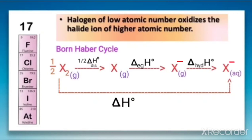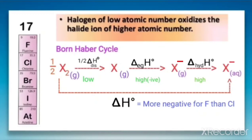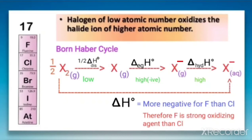For fluorine, the dissociation enthalpy is low, the electron gain enthalpy has a high negative value, and the hydration enthalpy is high. So the overall value delta H0 is more negative for fluorine than for chlorine. Because of this, fluorine is a stronger oxidizing agent than chlorine.